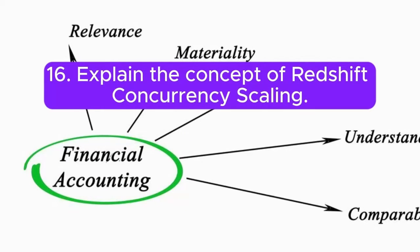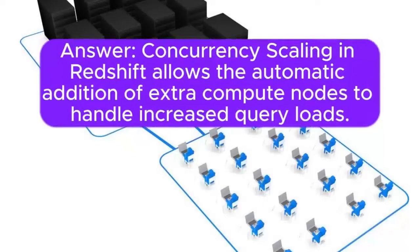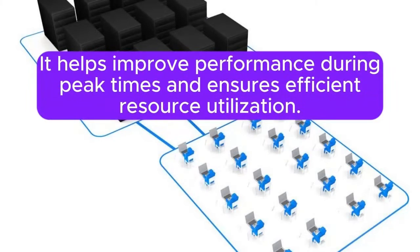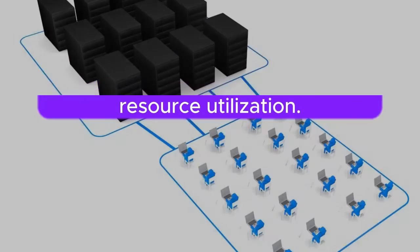Question 16: Explain the concept of Redshift concurrency scaling. Answer: Concurrency scaling in Redshift allows the automatic addition of extra compute nodes to handle increased query loads. It helps improve performance during peak times and ensures efficient resource utilization.